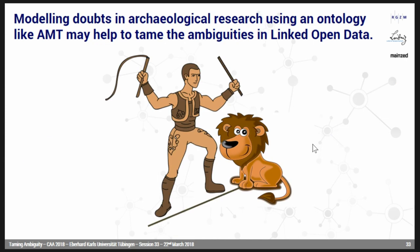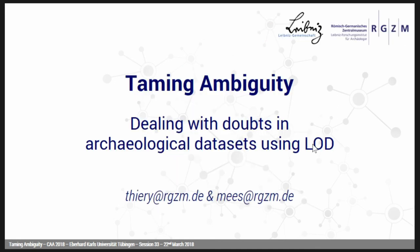As a conclusion, we think that modeling doubts in archaeological research using an ontology like AMT may help to tame the ambiguities in linked open data. In the end, we just want to say that what we have done here is not the only correct way — we simply want uncertainty and vagueness to be kept in mind when modeling something. And maybe it works. Thank you.